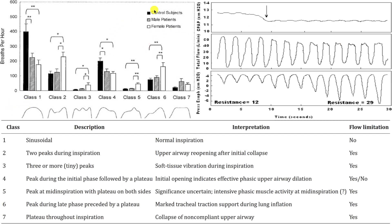On the left side, this is a study with normal people as controls, male patients with sleep apnea, and female patients with sleep apnea. The researchers categorized seven different types of breaths. Class one is normal — a well-rounded breath. The controls, people who didn't have sleep apnea, show this as their most common breath. Down here on the table, the researchers provide an interpretation for what they believe each class of breath represents, noting they can't say this with certainty — it's speculative.